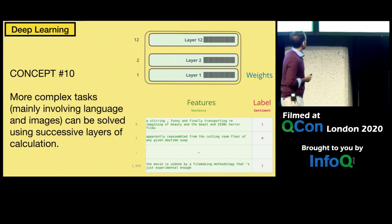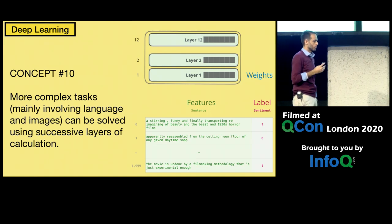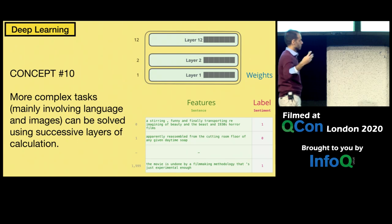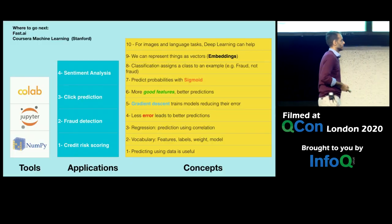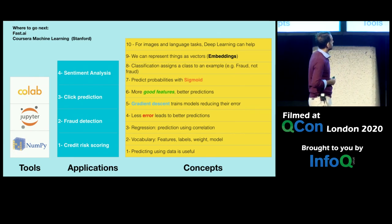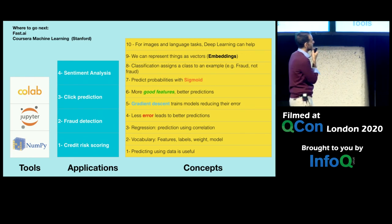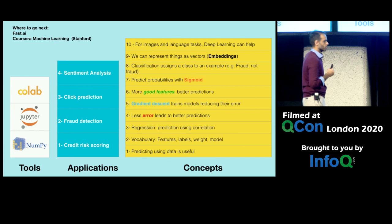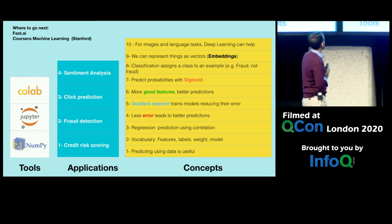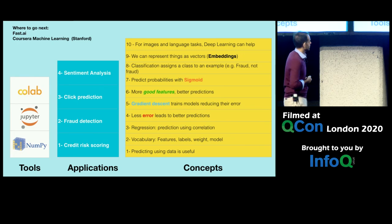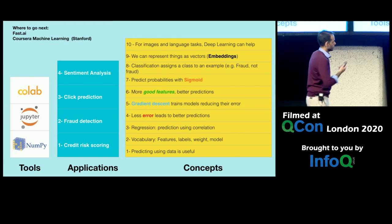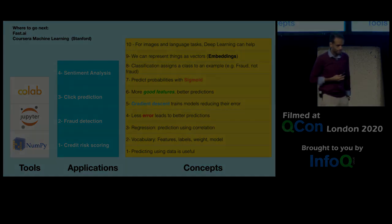That's concept number ten. You now have the vocabulary to think about machine learning and deep learning: features, labels, embeddings, weights, layers. These are some of the most interesting ideas in machine learning. Hopefully when you run into them, you'll be less intimidated, because trust me — the intuition is a lot easier than it might seem when you look at the math. If you want to do more, check out fast.ai, the Coursera machine learning course, and stay for Suzanne's next talk. Thank you very much.